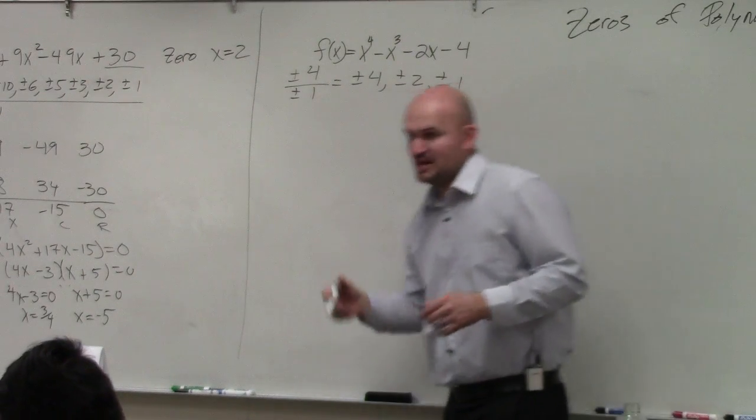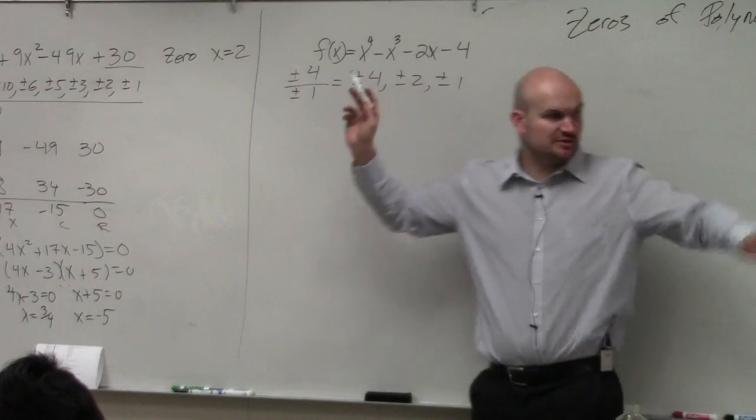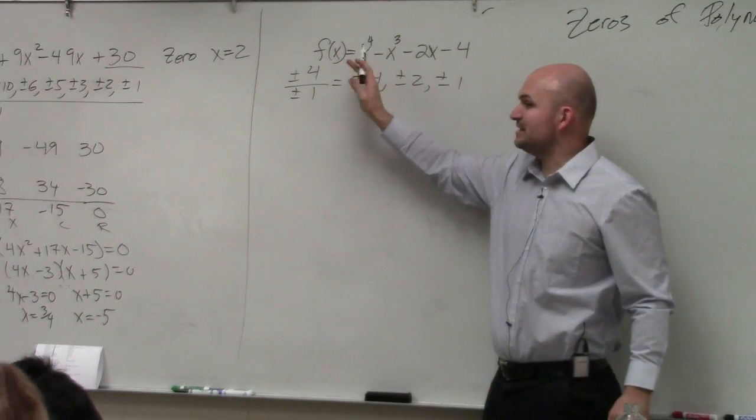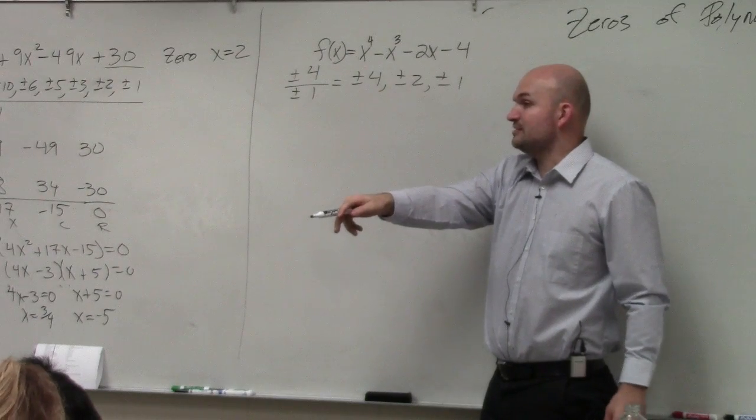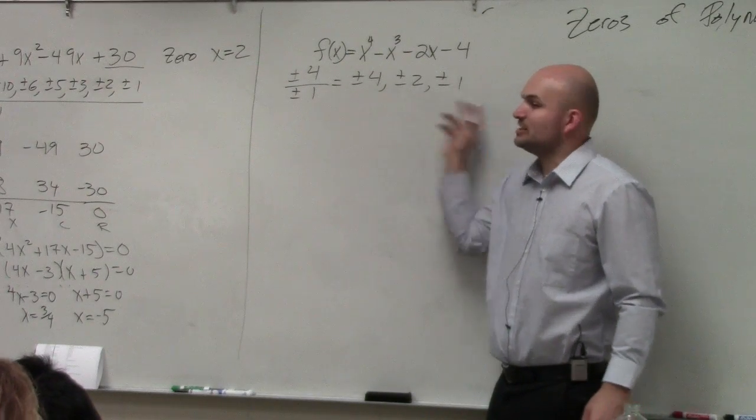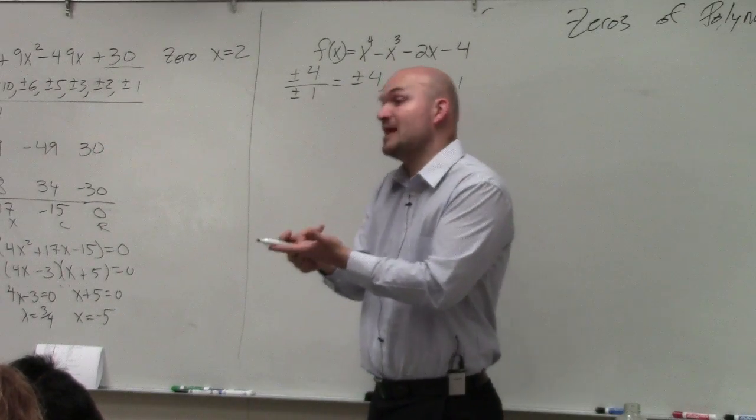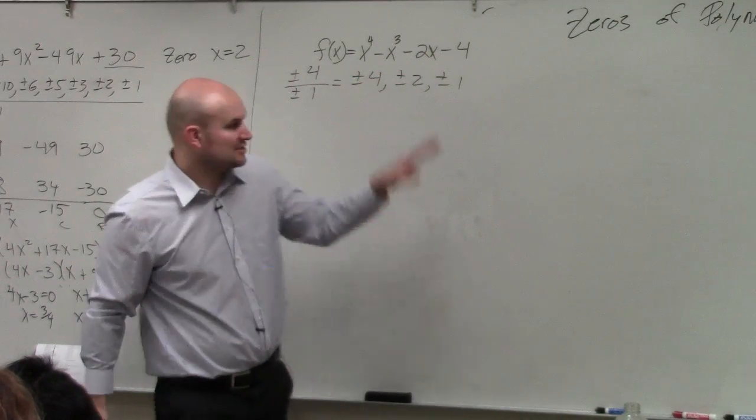So you have 6 possible. But again, hold on. Another thing to remember though, that just means 4 zeros. It doesn't mean they have to, remember what you talked about, imaginary? They can be imaginary. This is only telling you the real rational. So you could have imaginary, you could also have square roots, which would be irrational. So you have more options, not just these.